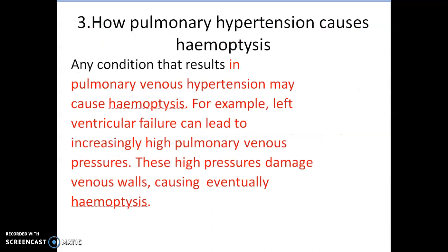Now I talk about how pulmonary hypertension causes Haemoptysis. Any condition that results in pulmonary venous hypertension may cause Haemoptysis. For example, right ventricular failure can lead to increasingly high pulmonary venous pressures. These pressures damage the venous wall, eventually causing Haemoptysis.